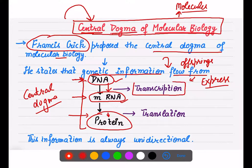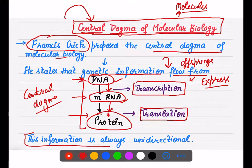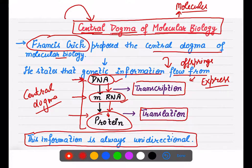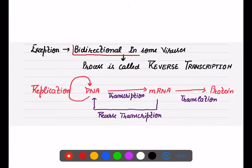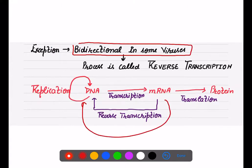When DNA changes into mRNA, the process is known as transcription. When protein is formed from mRNA, it is known as translation. In all living organisms except some viruses, this flow of information is unidirectional. The exception is some viruses, where RNA can change back into DNA — a process called reverse transcription, making it bidirectional.